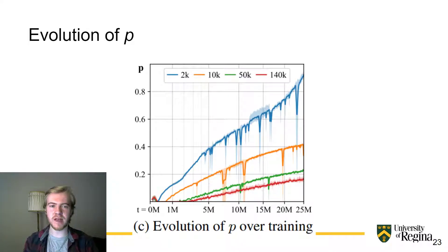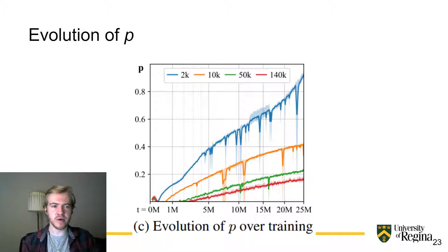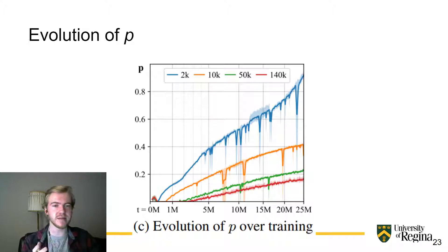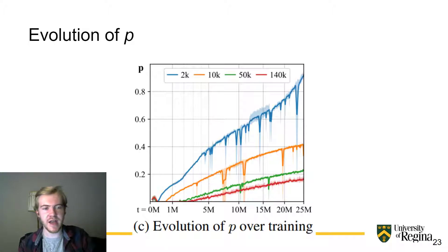Here, in practice, is how the value of P evolves over the course of training. As you can see, on the very small data set of 2,000 images, it grows quite quickly — up to almost 1 after showing it 25 million real images.